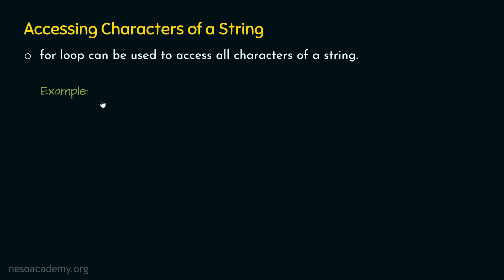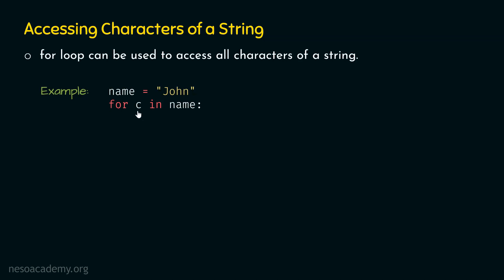For example, let's say that the name of some person is John. So the name variable is pointing to the string John. Now, let's say that we want to access each character of this string and display those characters on the screen. For this purpose, we can use for loop. This is how our for statement looks like: 'for c in name'. The name variable will eventually be replaced by John, and this variable c will receive each character of the string one at a time.